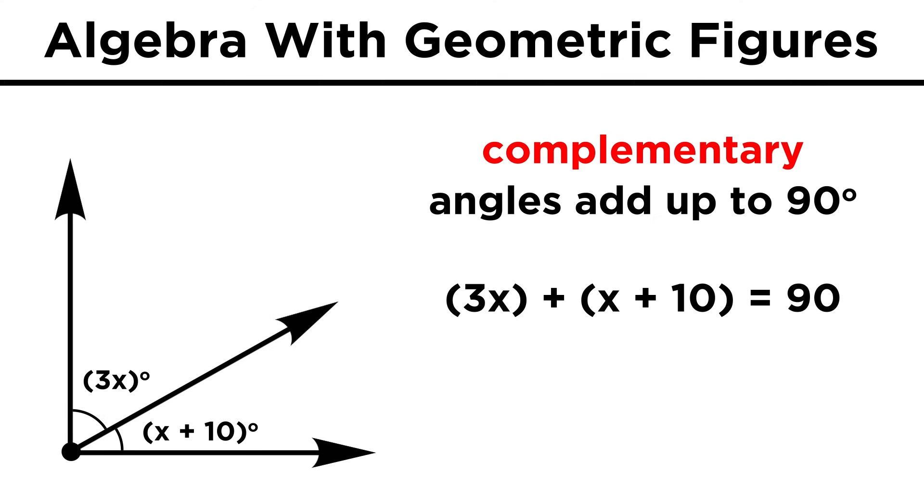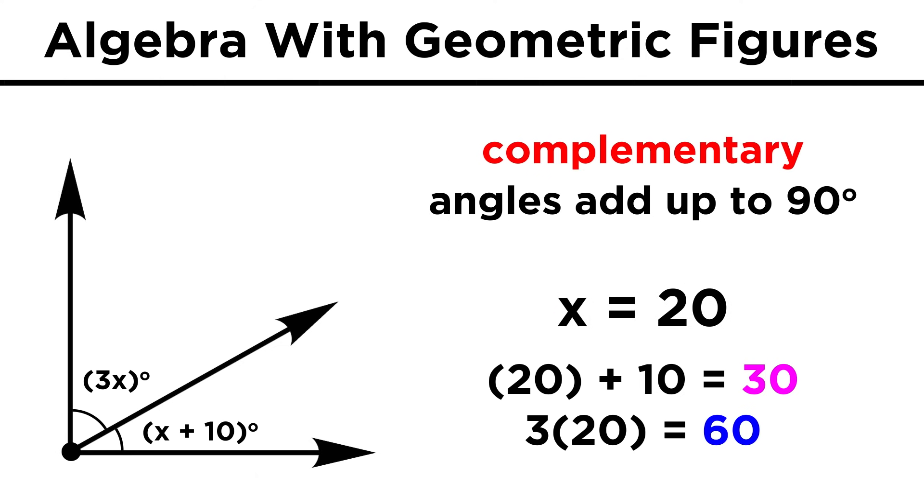We just use the definition of complementary angles. They must add up to 90 degrees, so we make an equation, combine like terms to get 4x plus 10 equals 90, subtract 10, and divide by 4, which gives us 20 degrees for x. Plugging in 20, that makes the angles 30 and 60 degrees.